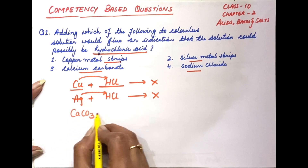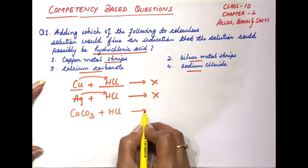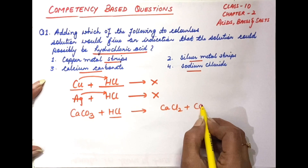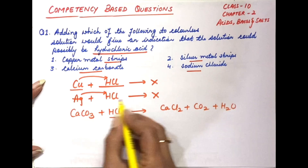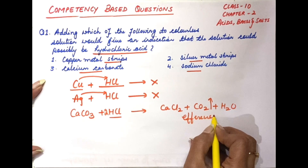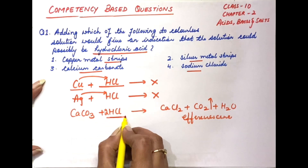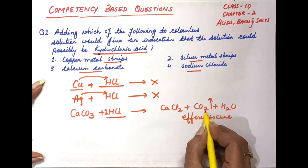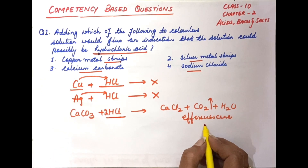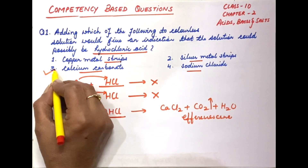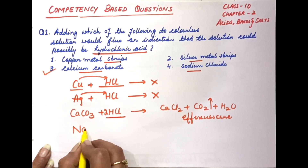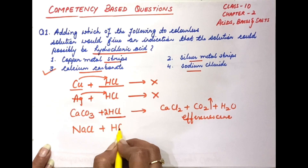Calcium carbonate reacts with HCl. इस reaction में we get calcium chloride, carbon dioxide, and water formation. So there is effervescence — effervescence तभी होगी अगर calcium carbonate की reaction hydrochloric acid के साथ हो. Carbon dioxide evolves, and बहुत सारे bubble formation होते हैं, जिसको हम कहते हैं effervescence. So calcium carbonate is our correct answer.